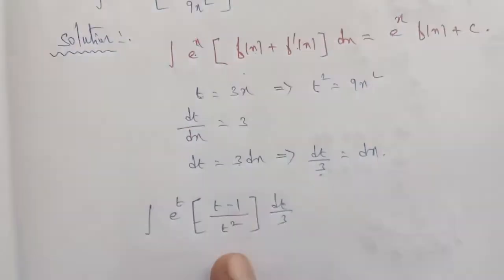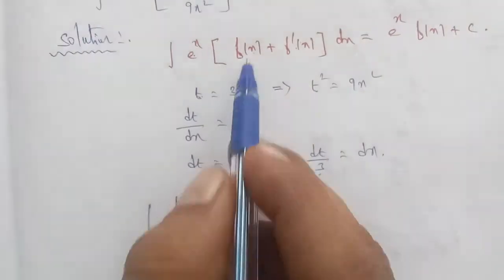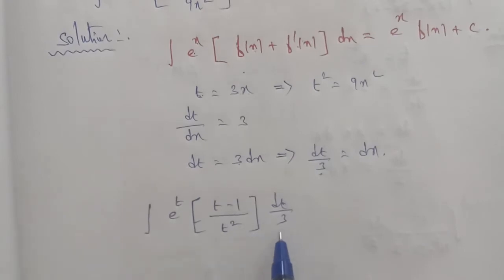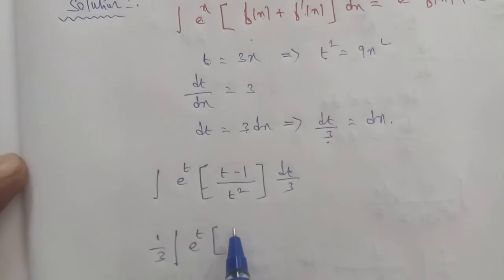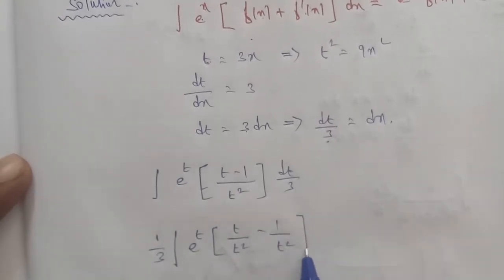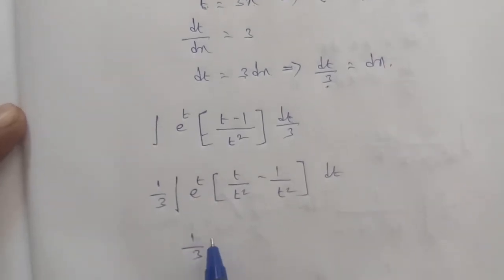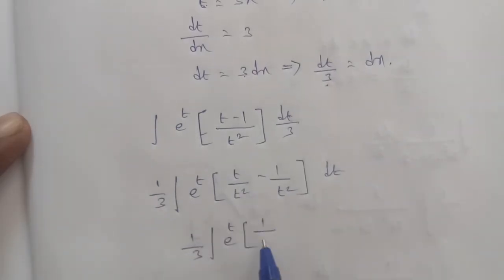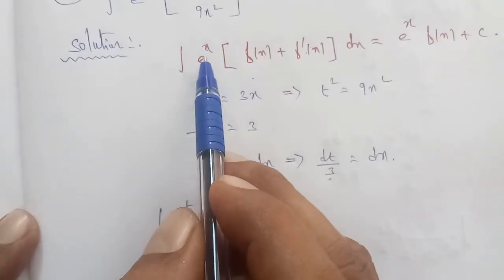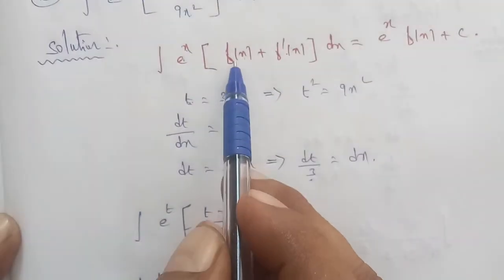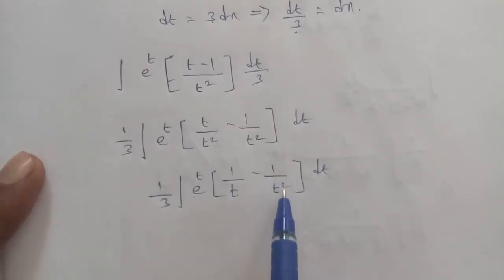Now applying the formula. Since 1 by 3 is a constant we take it outside. So we have 1 by 3 times the integration of e power t times (t minus 1) by t squared dt. Splitting the fraction: t by t squared minus 1 by t squared equals 1 by t minus 1 by t squared. So the integral becomes 1 by 3 times integral of e power t times [1 by t minus 1 by t squared] dt.